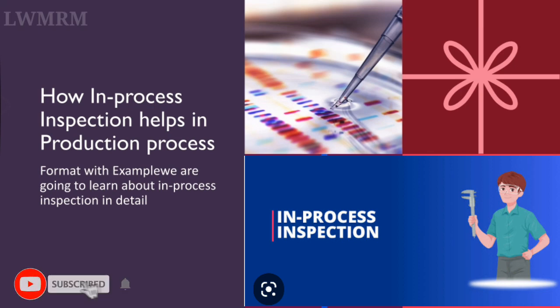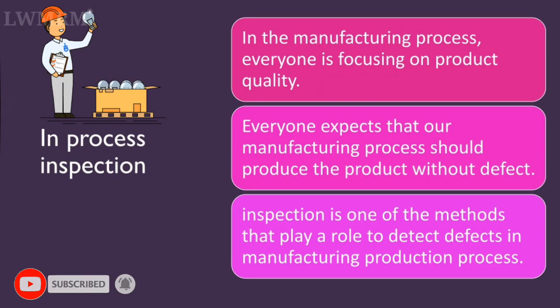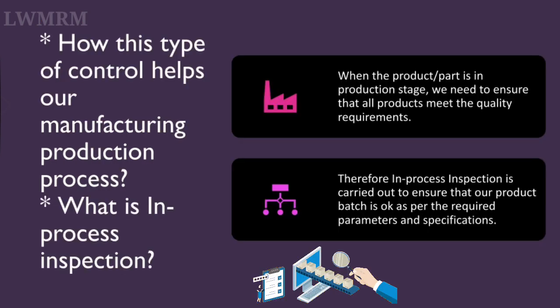Hi friends, we are going to learn about in-process inspection in detail. In the manufacturing process, everyone is focusing on product quality. Everyone expects that our manufacturing process should produce the product without defect. Inspection is one of the methods that plays a role to detect defects in the manufacturing production process. The question is how this type of control helps our manufacturing production process.